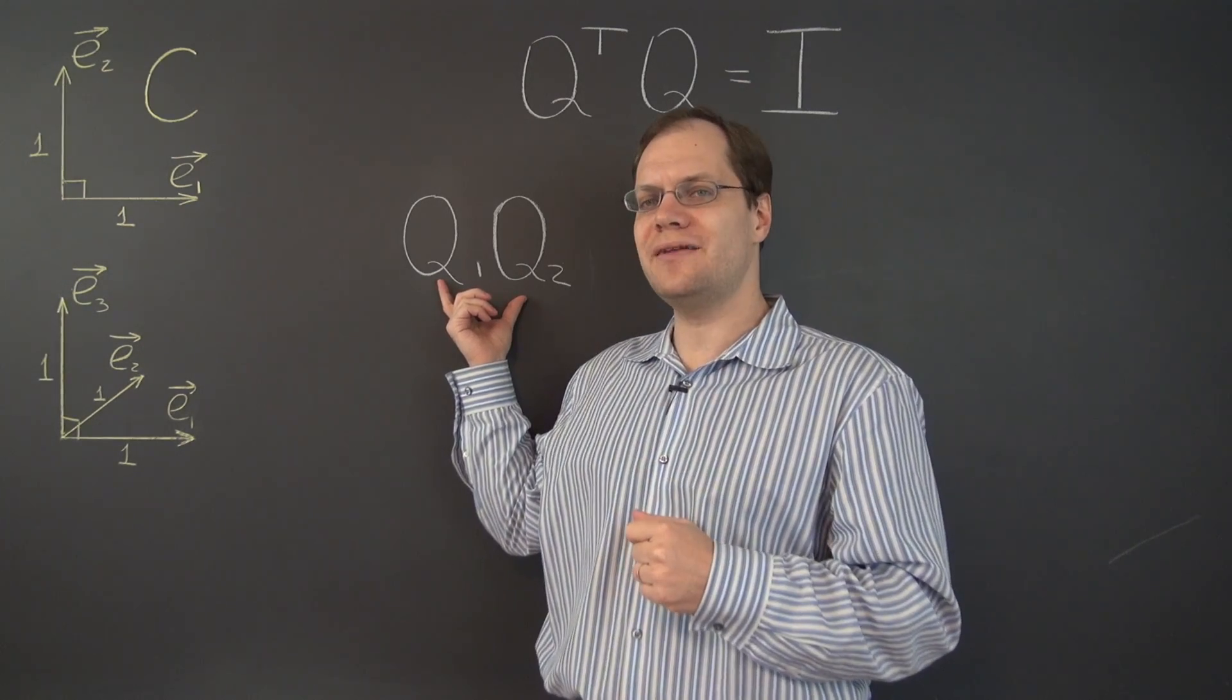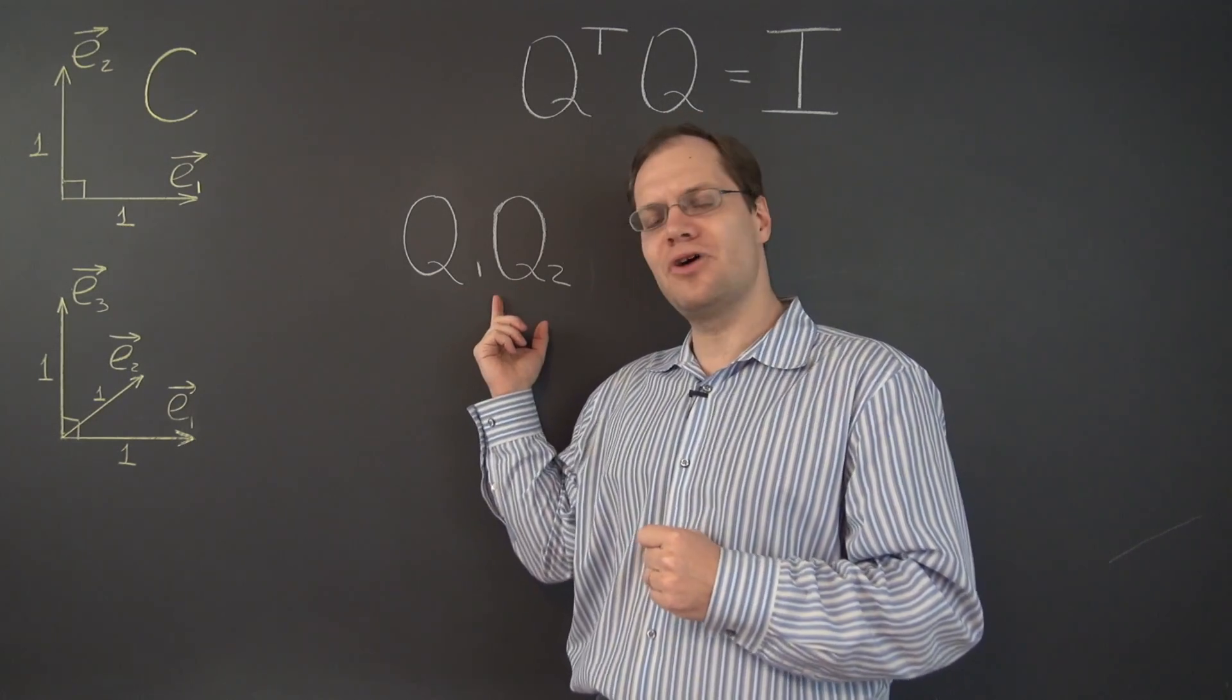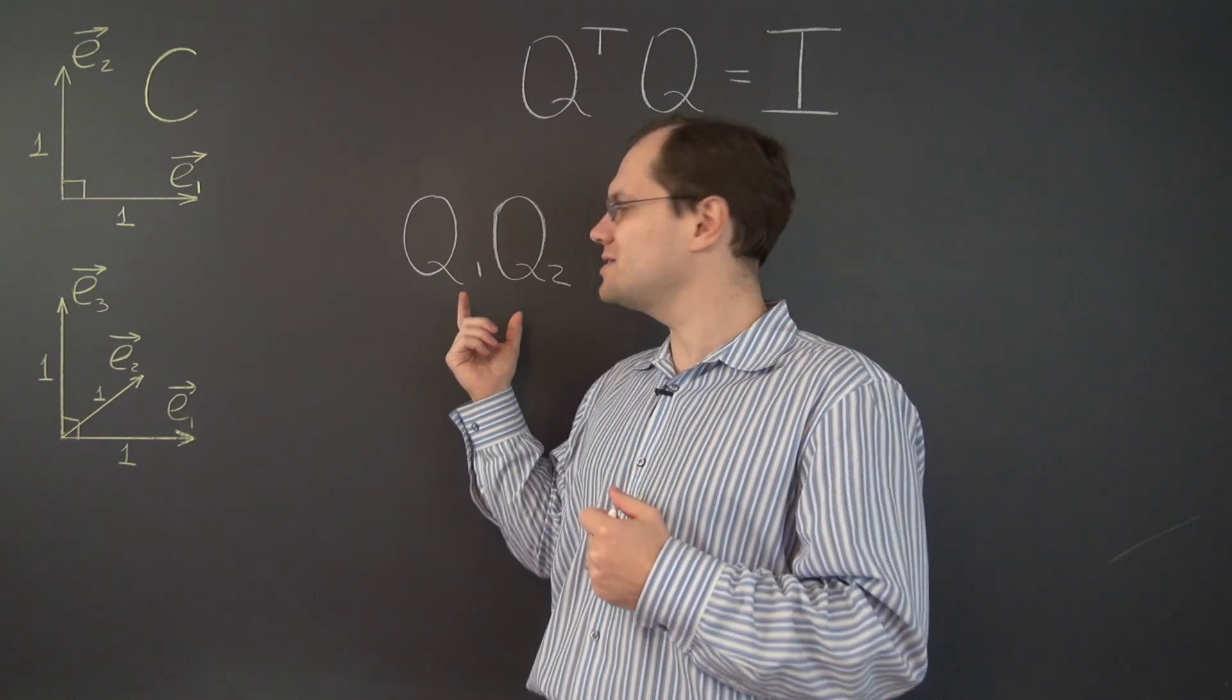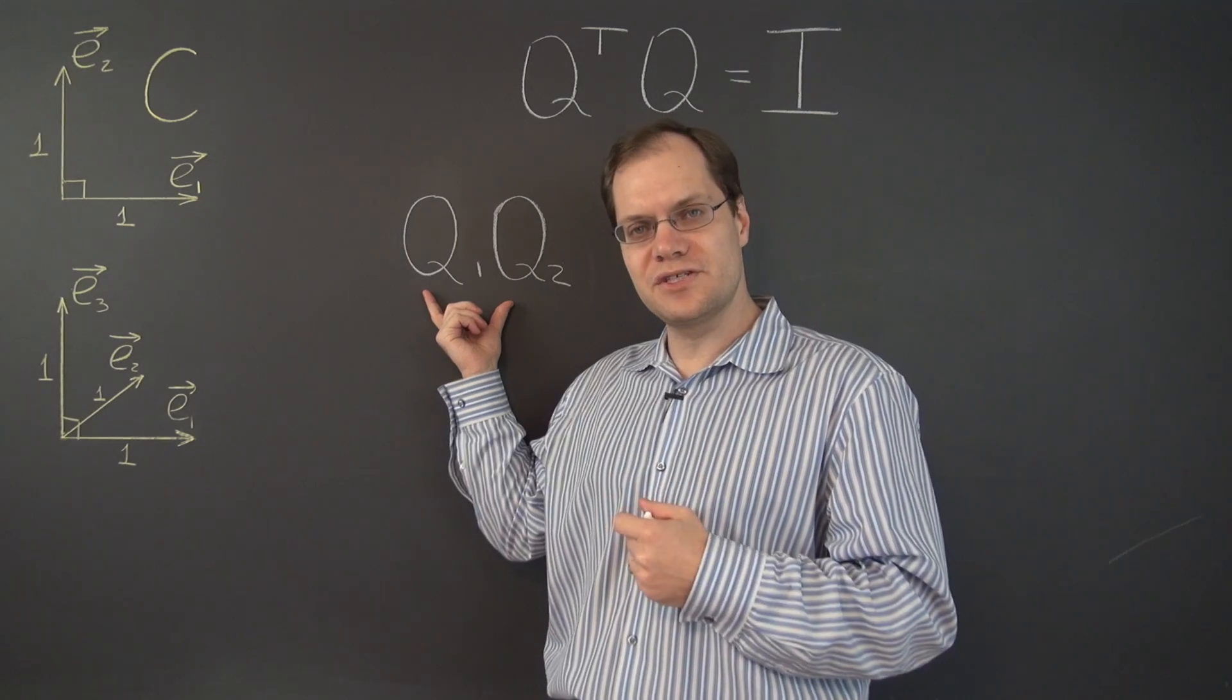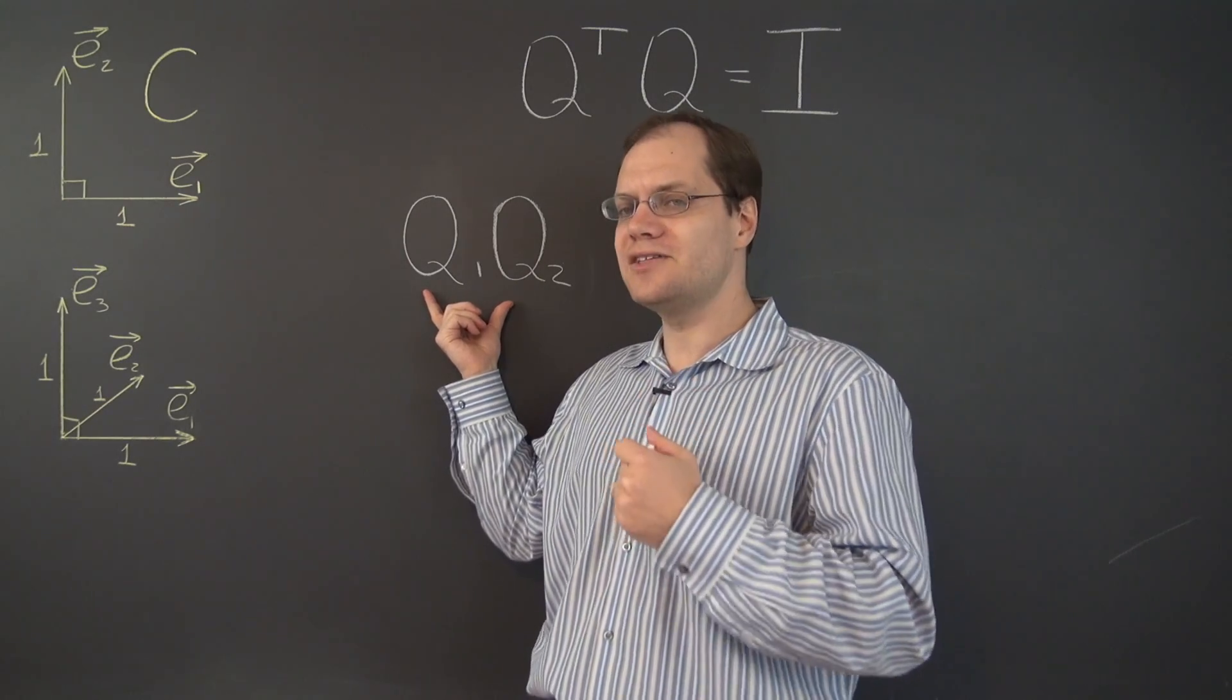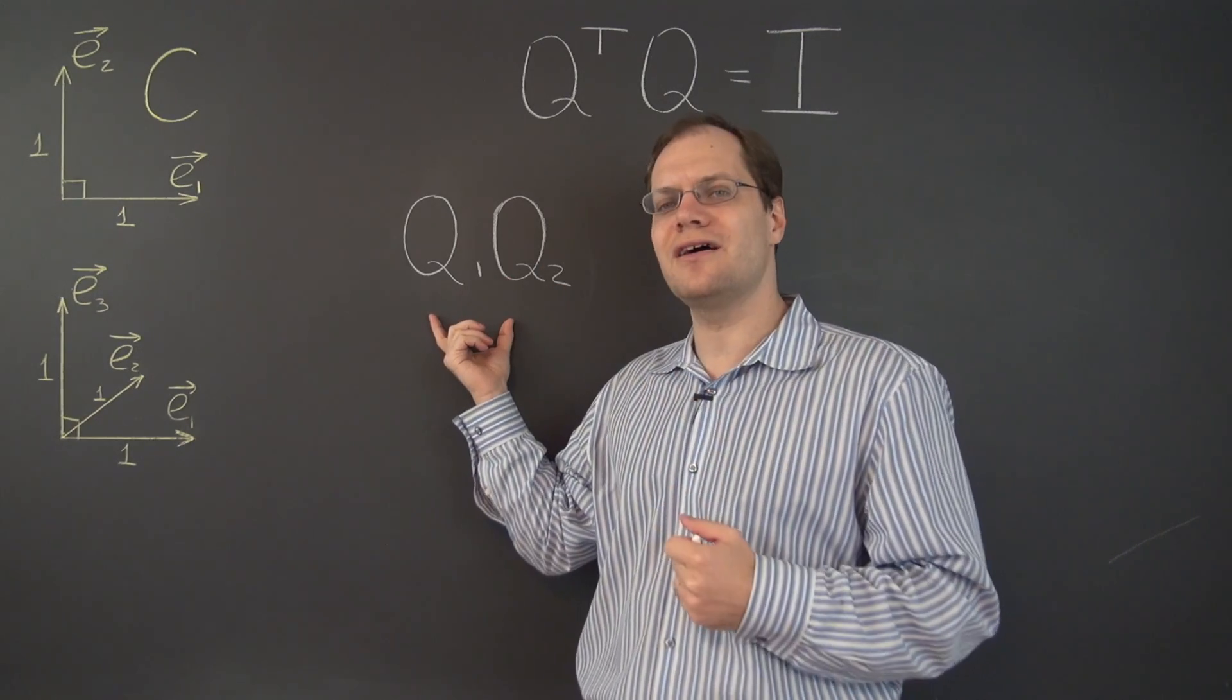How are we going to show that? We'll consider two orthogonal matrices Q1 and Q2 and their product, and we'll see what we can say about the inverse of this product. If the inverse of this product proves to be the transpose of this product, then by definition, this matrix is itself orthogonal.